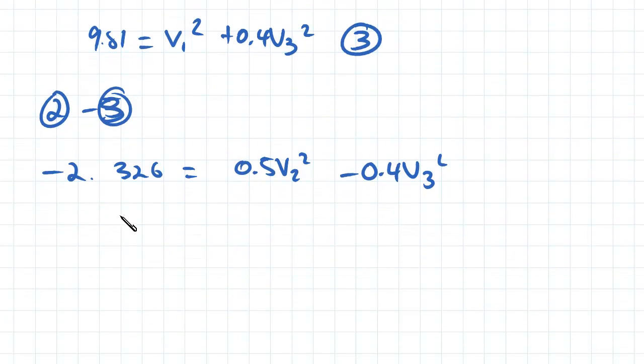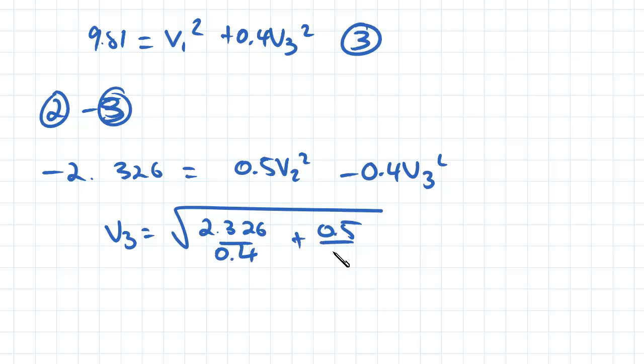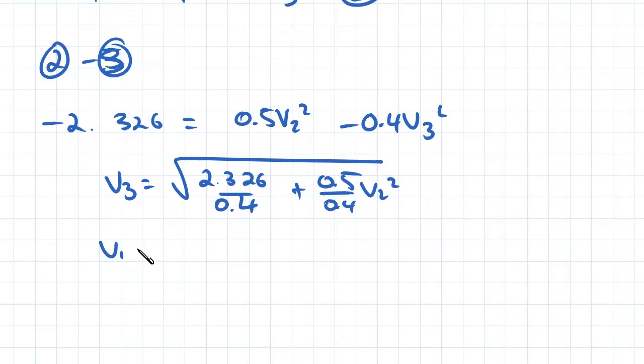And then we can rearrange to make an equation for v3. So v3 is going to be equal to the square root of 2.326 divided by 0.4 plus 0.5 over 0.4 times v2².